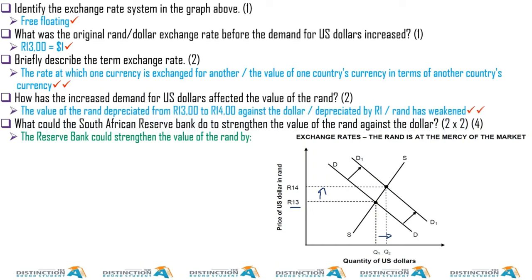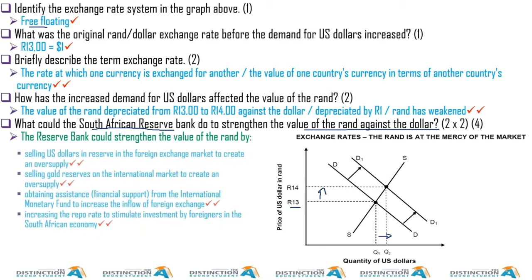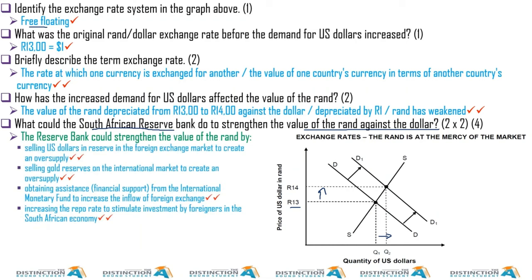The rand has depreciated from 1 is to 13 to 1 is to 14. What could the South African Reserve Bank do to strengthen the value of the currency? If the Reserve Bank does something, it contradicts the free-floating idea because there's a bit of intervention happening. The Reserve Bank can, number one, sell US dollars in reserve in the foreign exchange market to create an oversupply.